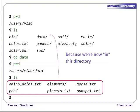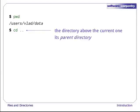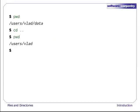Okay, we can go down the directory tree. How do we go up? If we're still in /users/vlad/data, we can use cd .. to go up one level. Dot dot is a special directory name meaning the directory containing this one, or more succinctly, the parent of the current directory. Sure enough, if we run pwd after running cd .., we're back in /users/vlad.